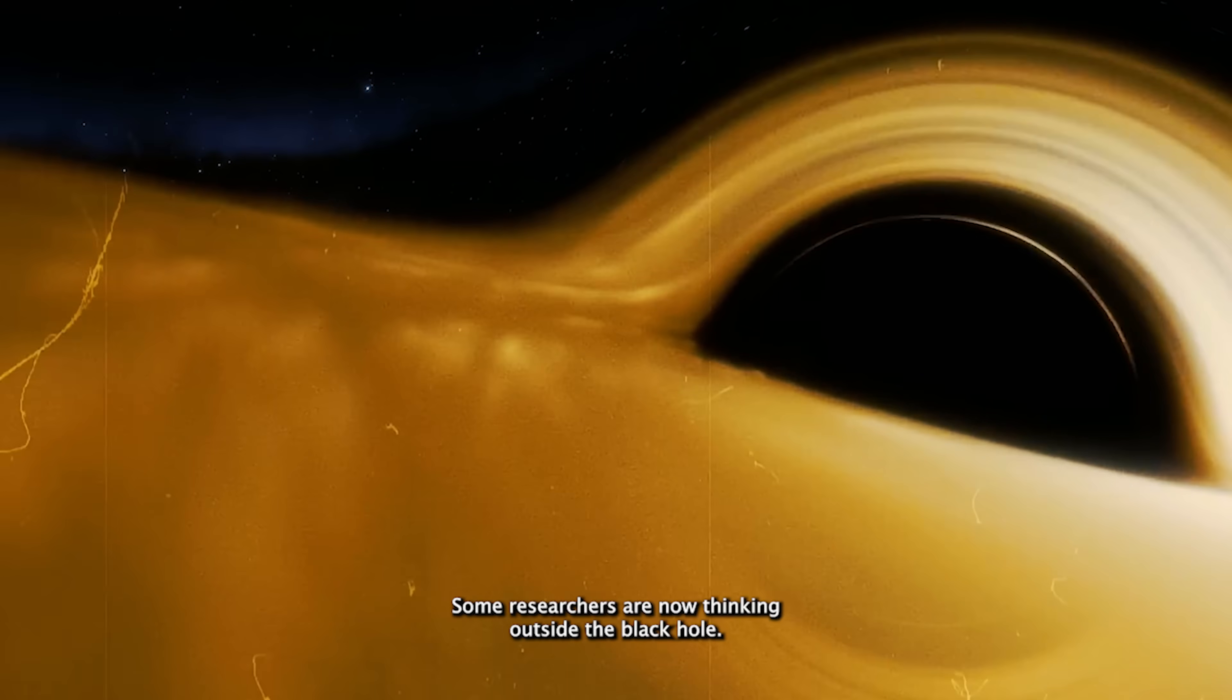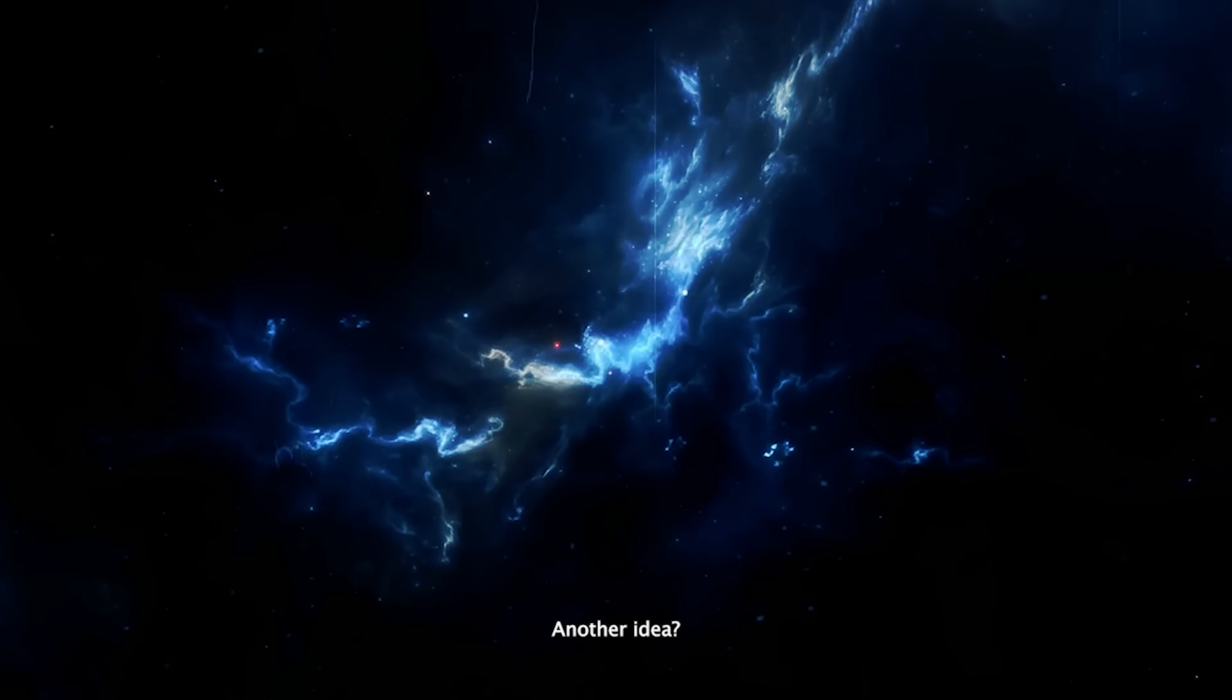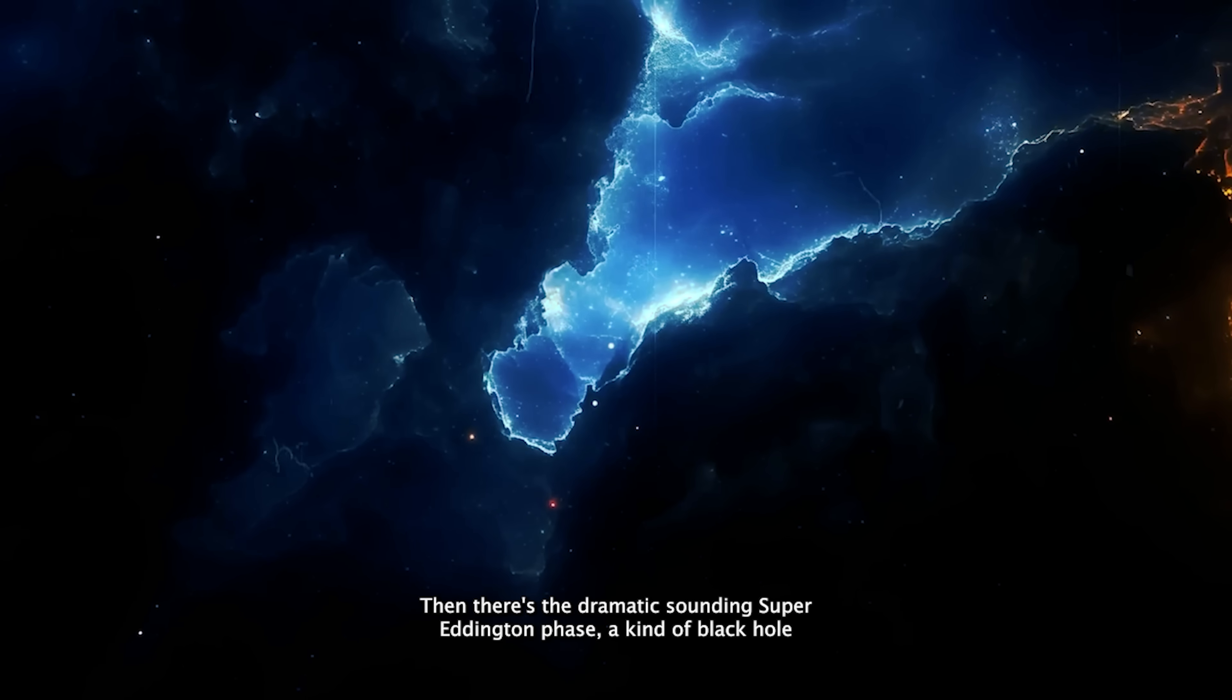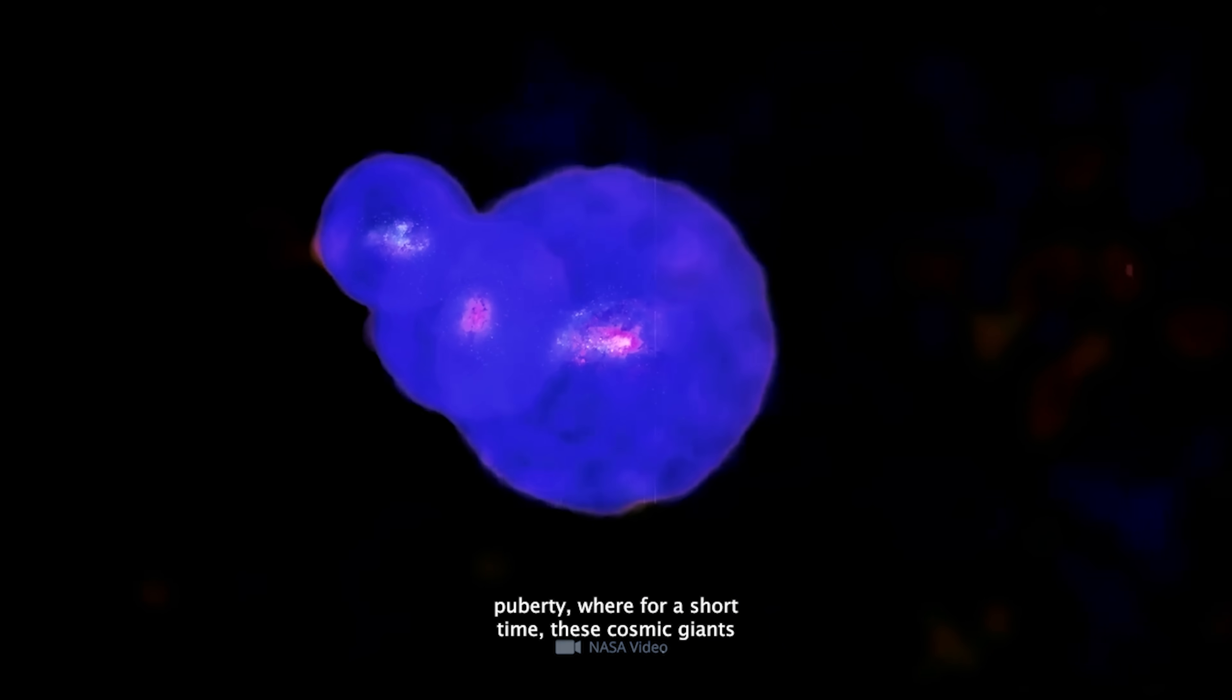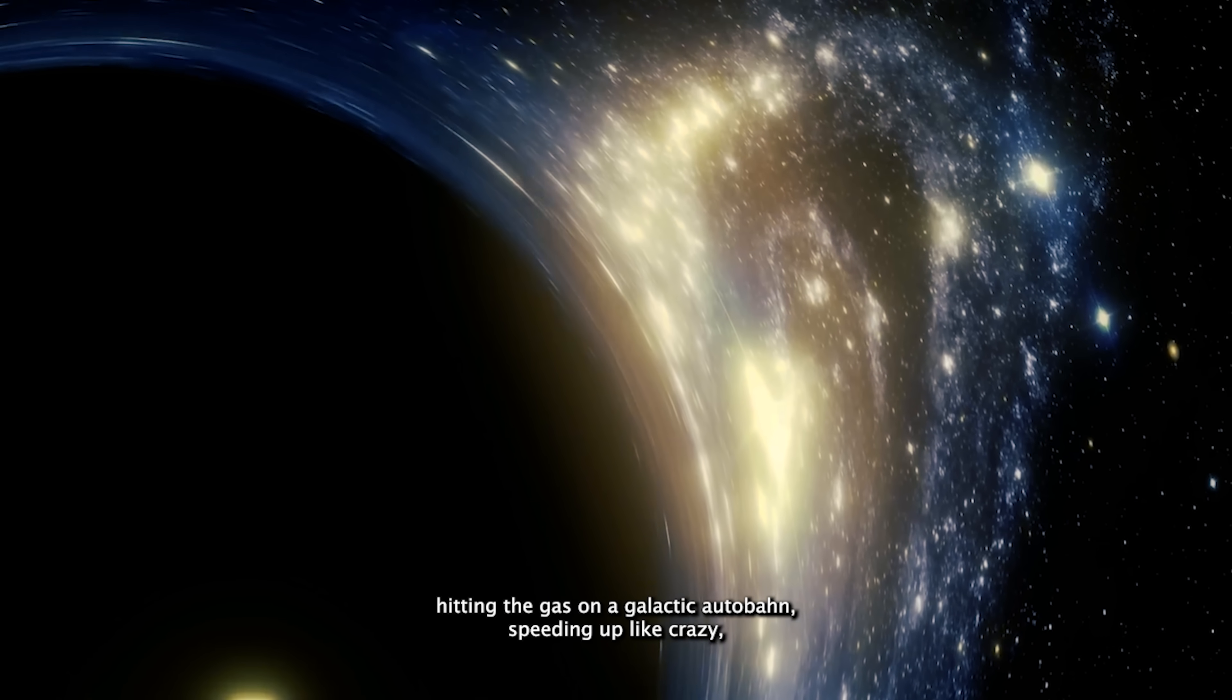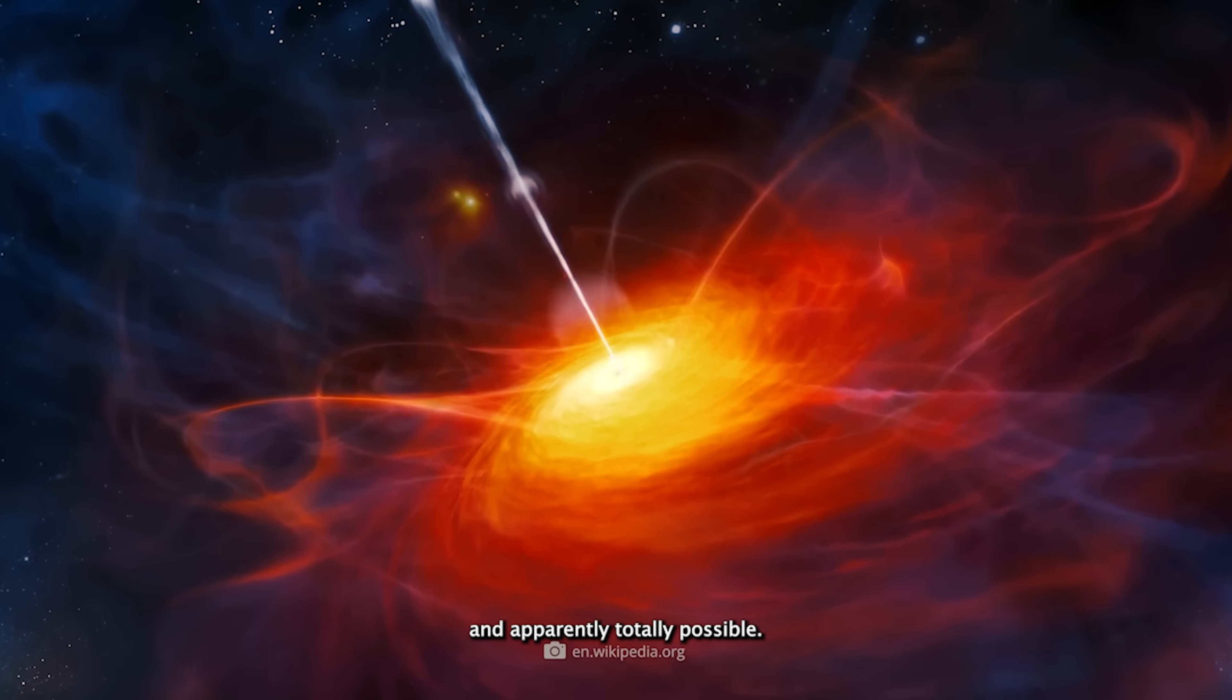Some researchers are now thinking outside the black hole. One theory? Chaotic accretion. Imagine matter falling in so fast and so randomly that the radiation pressure doesn't even get a chance to push back. Another idea? Cosmic shielding. Thick gas clouds could act like blackout curtains, keeping the radiation from blowing everything away. Then there's the dramatic-sounding Super Eddington phase, a kind of black hole puberty where, for a short time, these cosmic giants grow at a ridiculous rate, blowing past the usual limits like they're late for a galactic meeting. You can think of the Super Eddington phase like a black hole hitting the gas on a galactic autobahn, speeding up like crazy, then slamming on the brakes before the cosmic police catch up. It's intense, chaotic, and apparently totally possible.